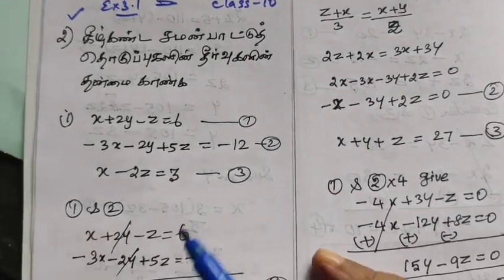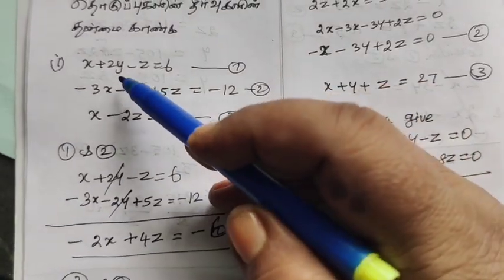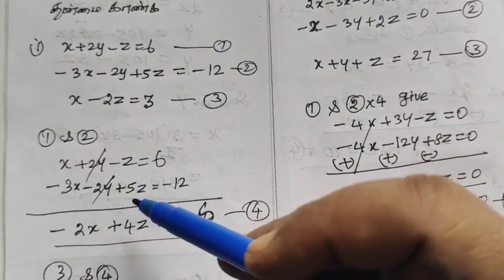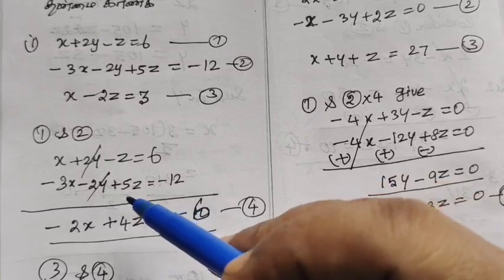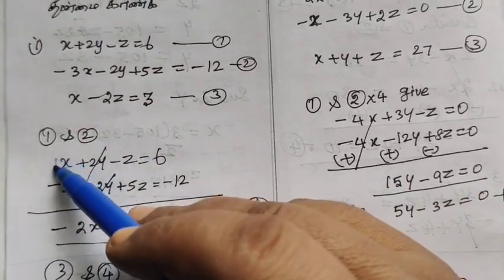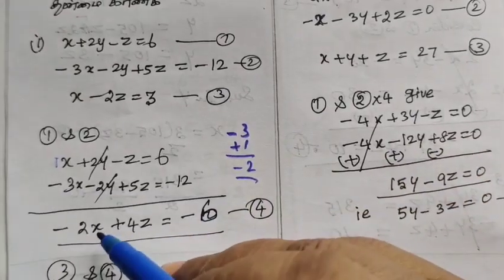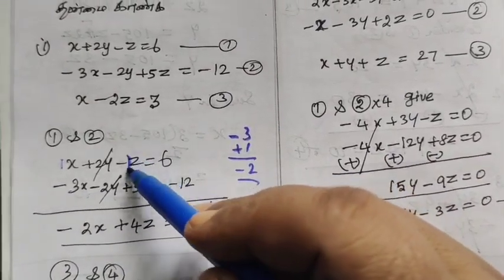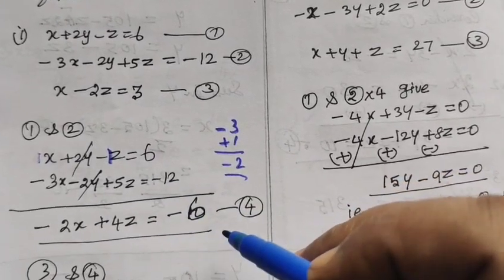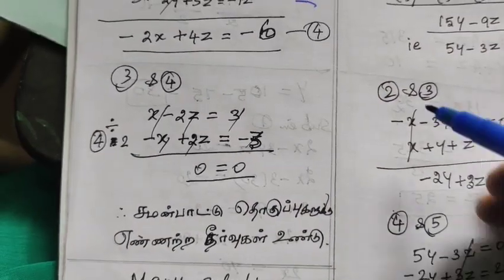Let's solve this equation. We are given 3 equations. Looking at plus 2y and minus 2y, we can't cancel directly. So after canceling, we have minus 2x. Minus 3 plus 1 gives minus 2, so minus 2x equals minus 12 plus 6, which is minus 6. Mark this as equation 4.